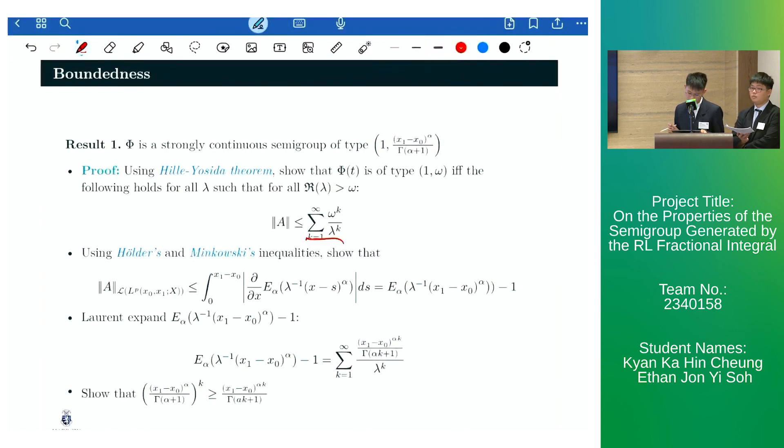Then, by using the Hölder and Minkowski inequalities, we can show that the operator norm of A is less than or equal to this expression, which we then expand to equate it to this sum. Lastly, we show that this inequality holds, allowing us to then infer that phi is of this type.